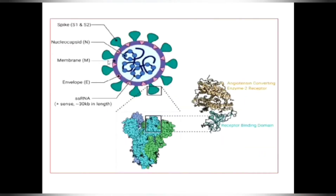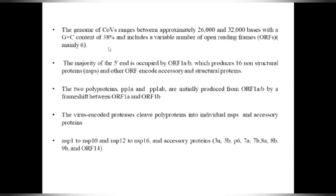Looking at the structure under electron micrograph, it consists of a spike protein with two subunits S1 and S2, nucleocapsid (N), membrane (M), envelope (E), and single-stranded positive-sense RNA about 30 kilobases in length. The genome of human coronaviruses ranges from 26,000 to 32,000 bases with a GC content of 38%, which relates to the guanine and cytosine content in the genetic structure of the virus.